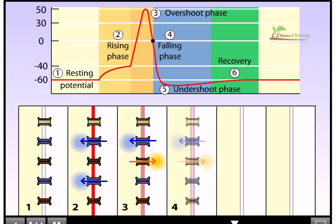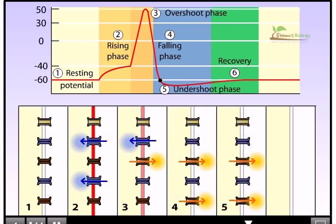Now the action potential is in its repolarizing phase, that is, the membrane potential is rapidly returning to the resting potential. During the falling phase, activation of voltage-gated potassium channels is at maximum, and the number of open sodium channels is dramatically reduced.